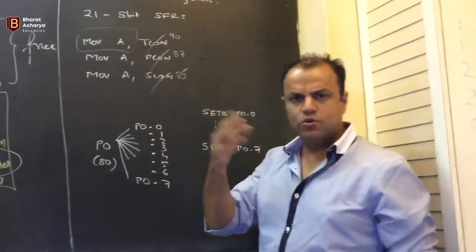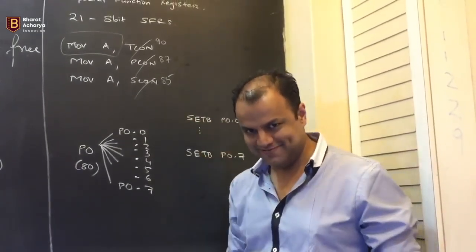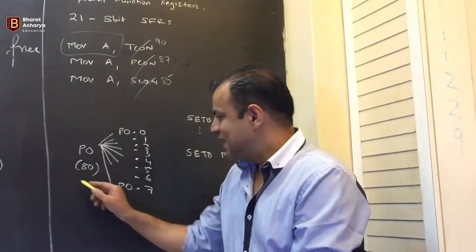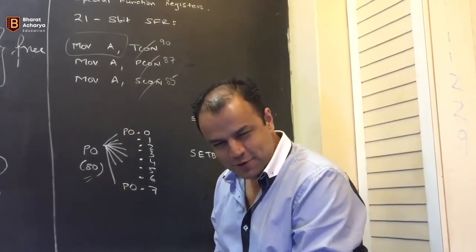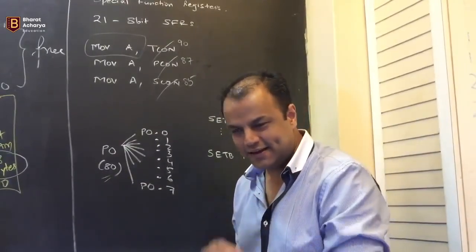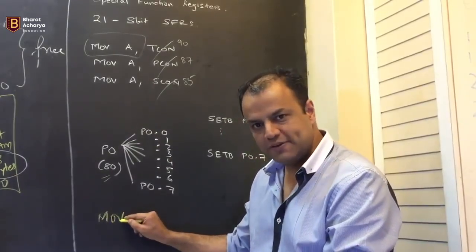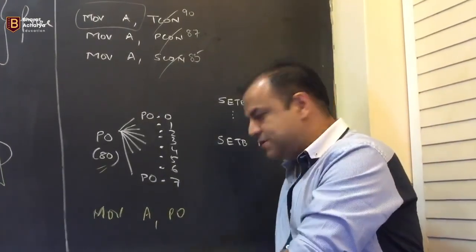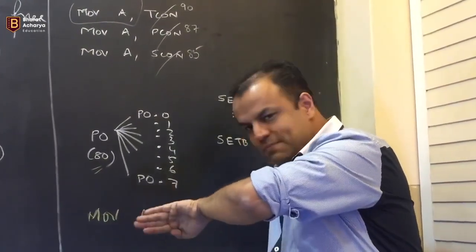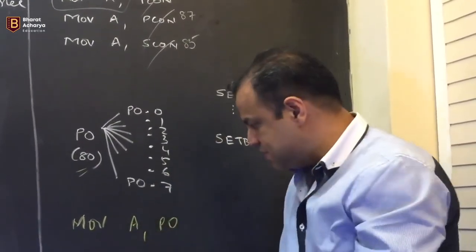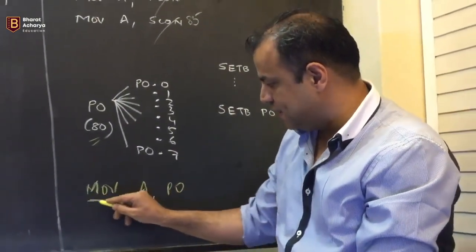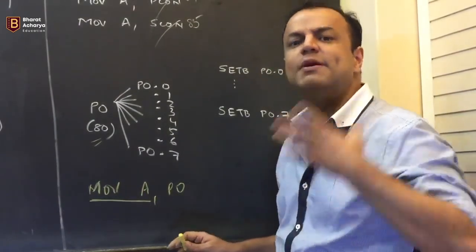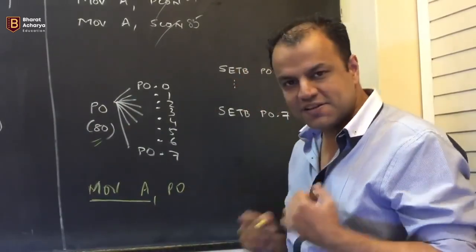There is something even more interesting. Port 0 is also an SFR — its address is 80. When you write MOV A, P0 in assembly language, the assembler converts it: there will be an opcode for MOV A. There is no separate opcode for MOV A, P0 — because then there would be an opcode for MOV A, P1; MOV A, P2; MOV A, P3 — that's 21 opcodes. This is the whole reason why SFRs are allotted addresses. The assembler substitutes the opcode for MOV A, and substitutes 80 as the address for port 0.